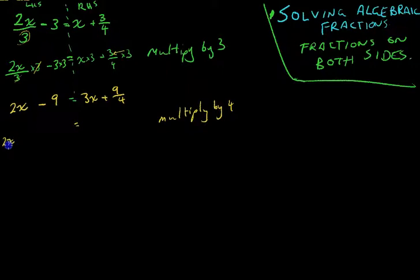And we're going to multiply everything by 4. So, it's going to be 2x times 4 minus 9 times 4 equals 3x times 4 plus 9 over 4 times 4. Now, changing colours.